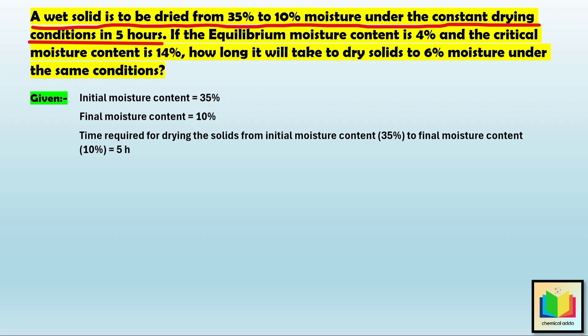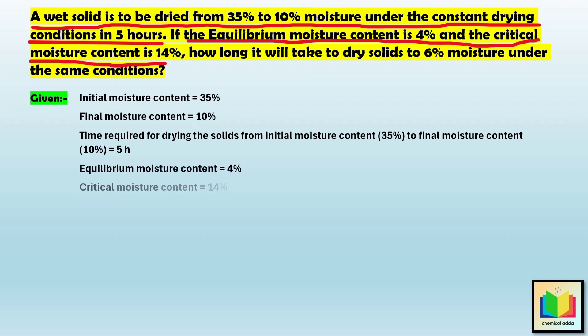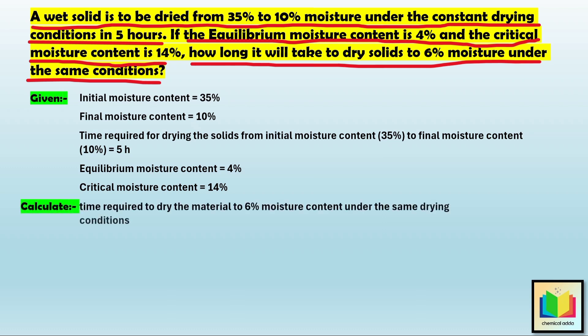We are also given that the equilibrium moisture content is 4% and the critical moisture content is 14%. In this example, we have to calculate how long it will take to dry solids to 6% moisture under the same conditions. In short, we are asked to calculate the time required to dry the material to 6% moisture content under the same drying conditions.